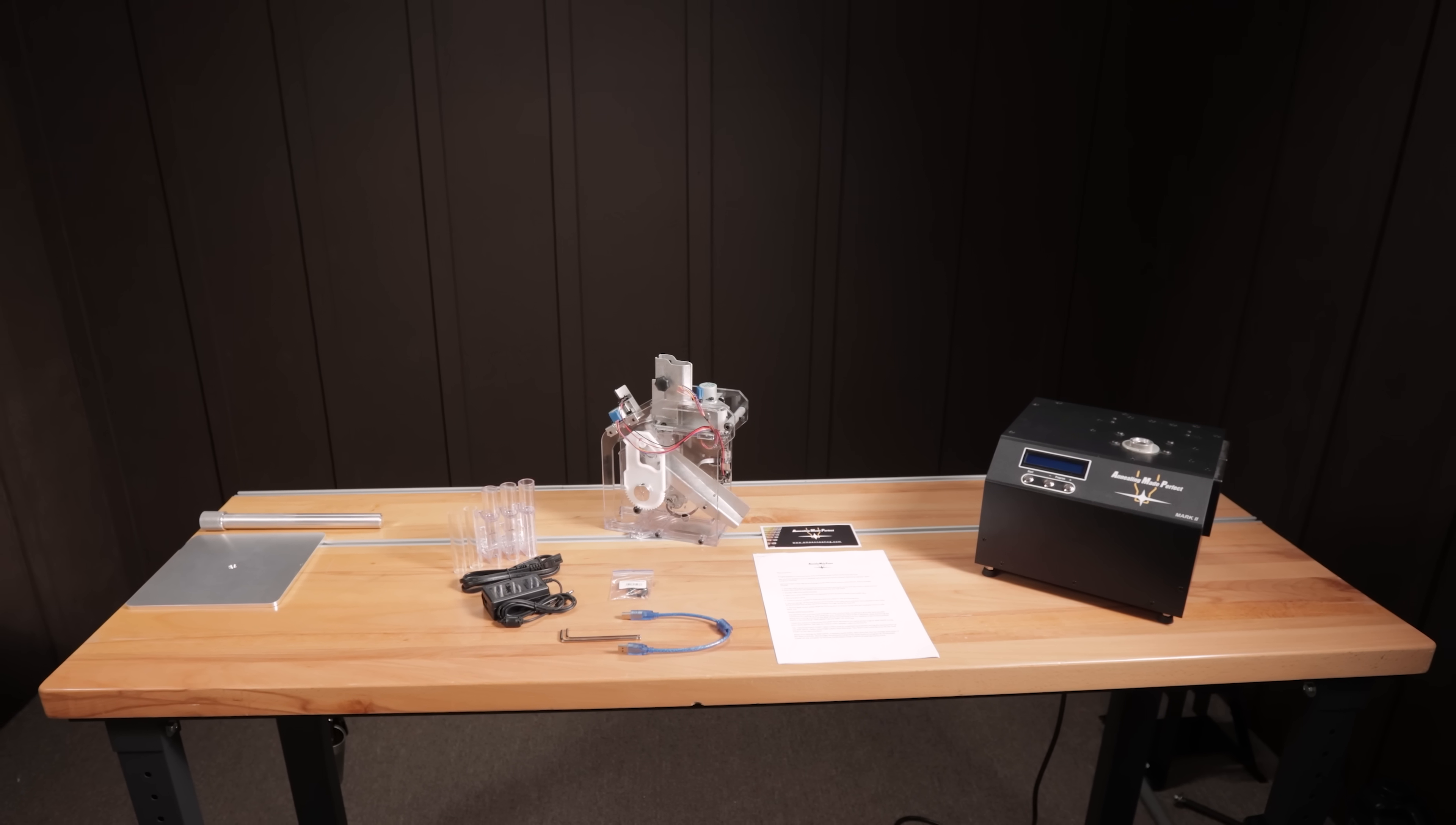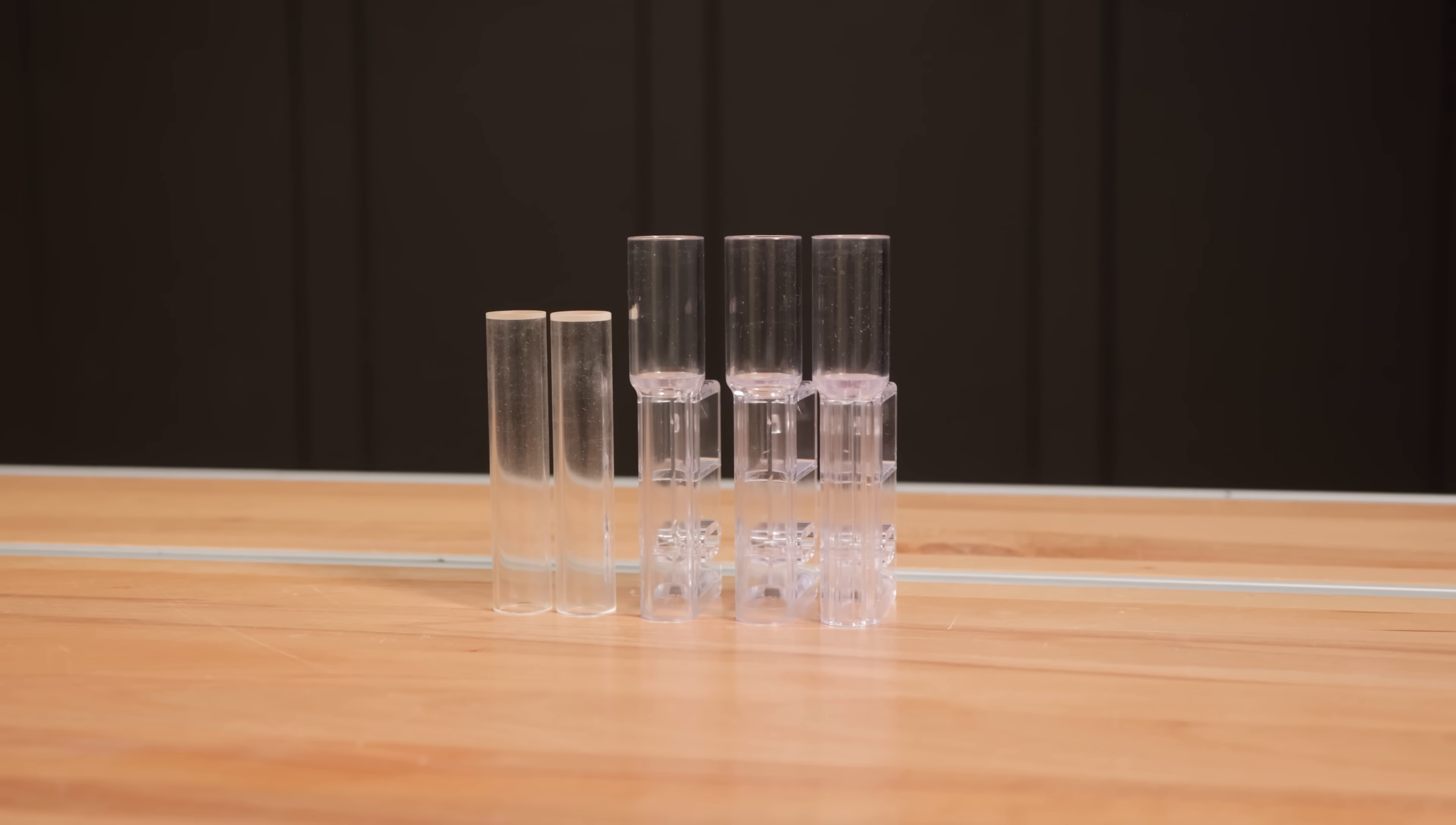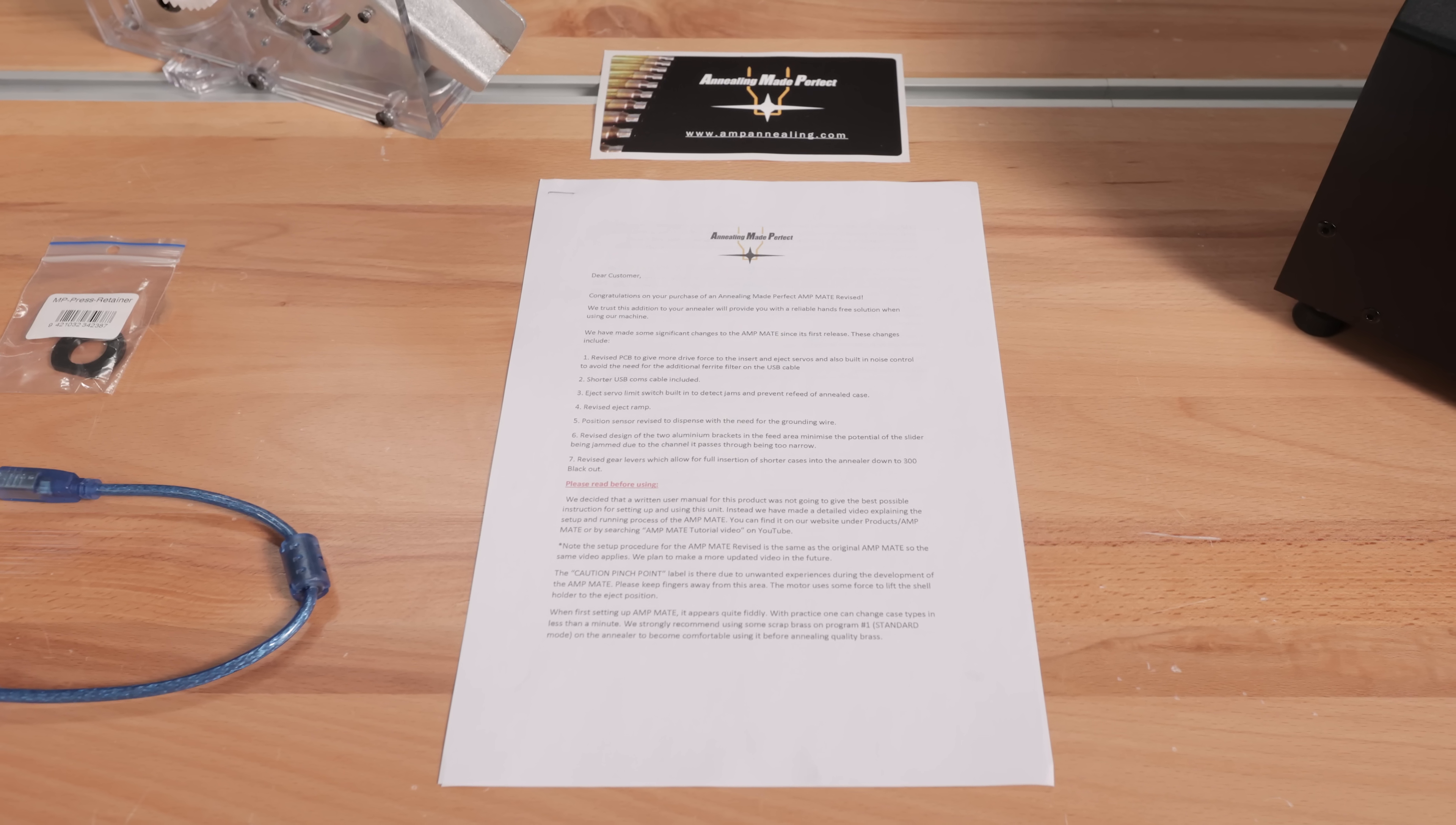So this is the contents of the AmpMate box and then we've got the amp stand from Creedmoor Sports over there. This is good news. It's fully assembled. We've got different case feed adapters, the power supply, a couple of Allen keys, a data cable, that's a USB cable. The AMP press retainer is what that's labeled as. We've got instructions, a sticker.